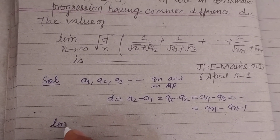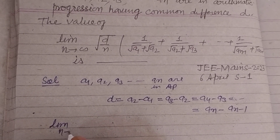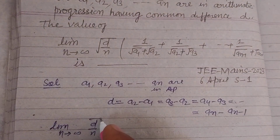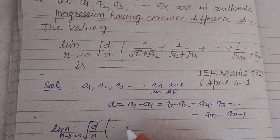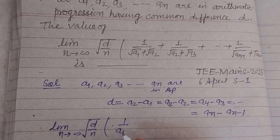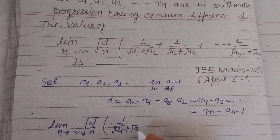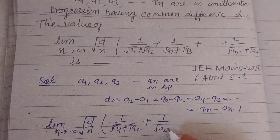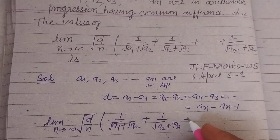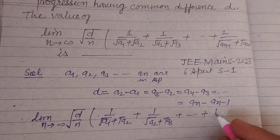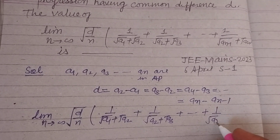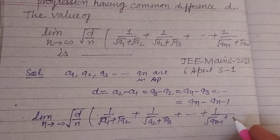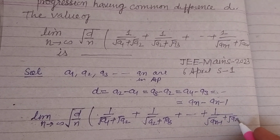So the given limit n tends to infinity of root d upon n, multiplied by: 1 upon (root A1 plus root A2) plus 1 upon (root A2 plus root A3) plus and so on, plus 1 upon (root AN minus 1 plus root AN).